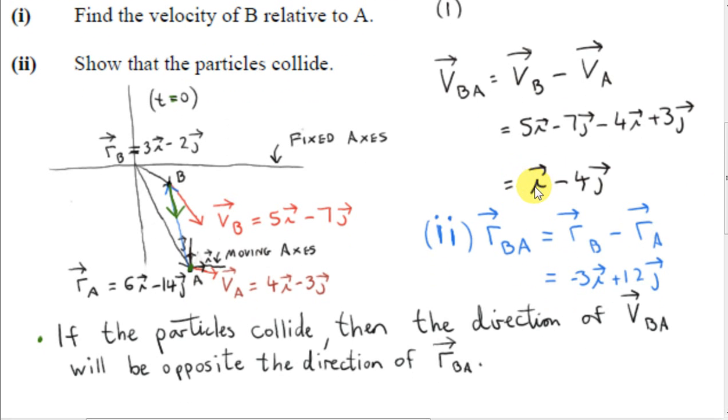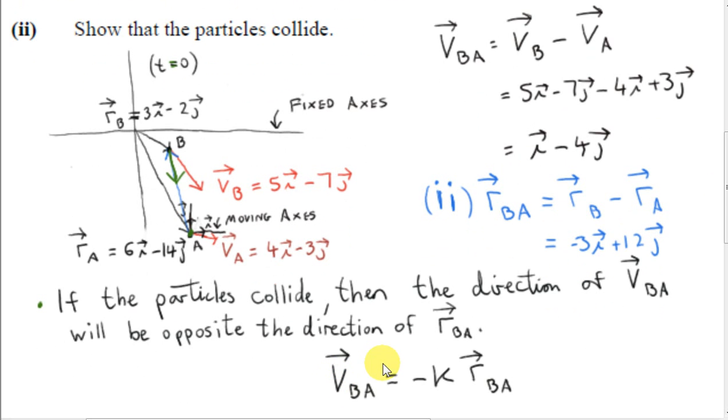How can we tell if one vector points in the opposite direction of another vector? Well, if the vectors point in opposite directions, then one vector will be a negative scalar times the other vector. So this K is some scalar, some positive number actually. And by sticking a minus sign in front of it, we ensure that we get a negative scalar multiple of vector RBA. Let's see if this is true.